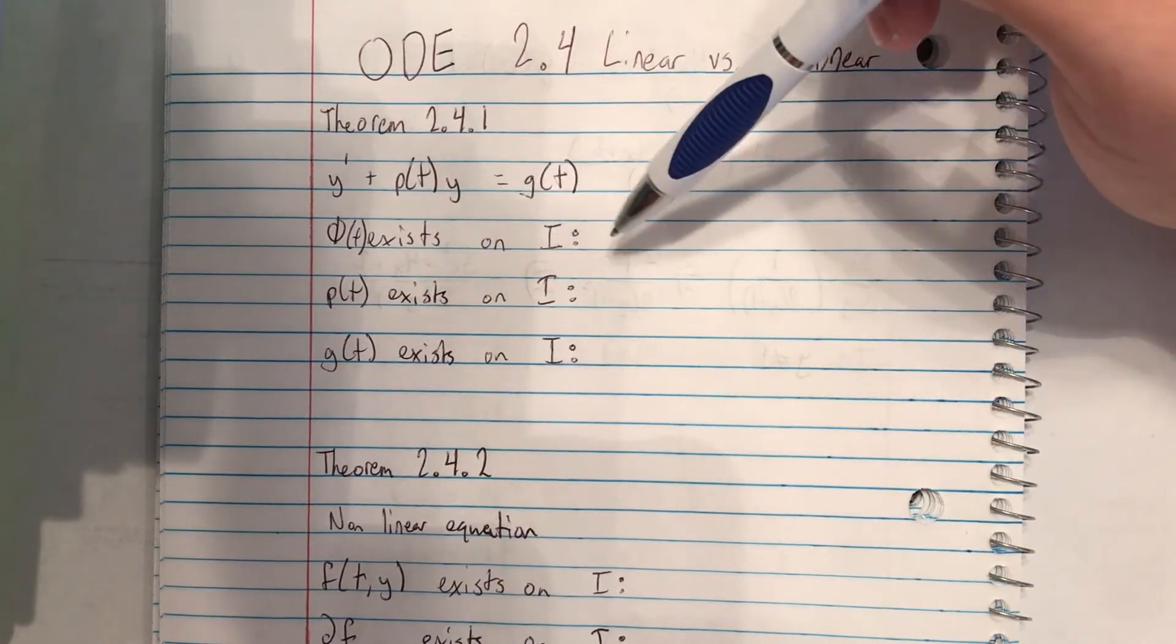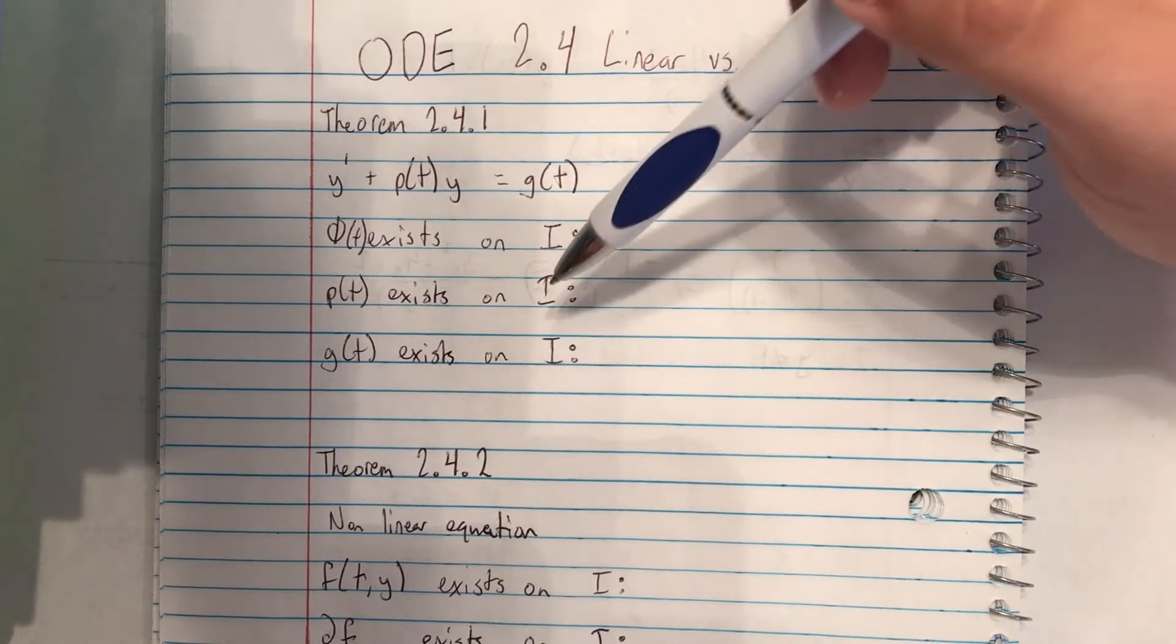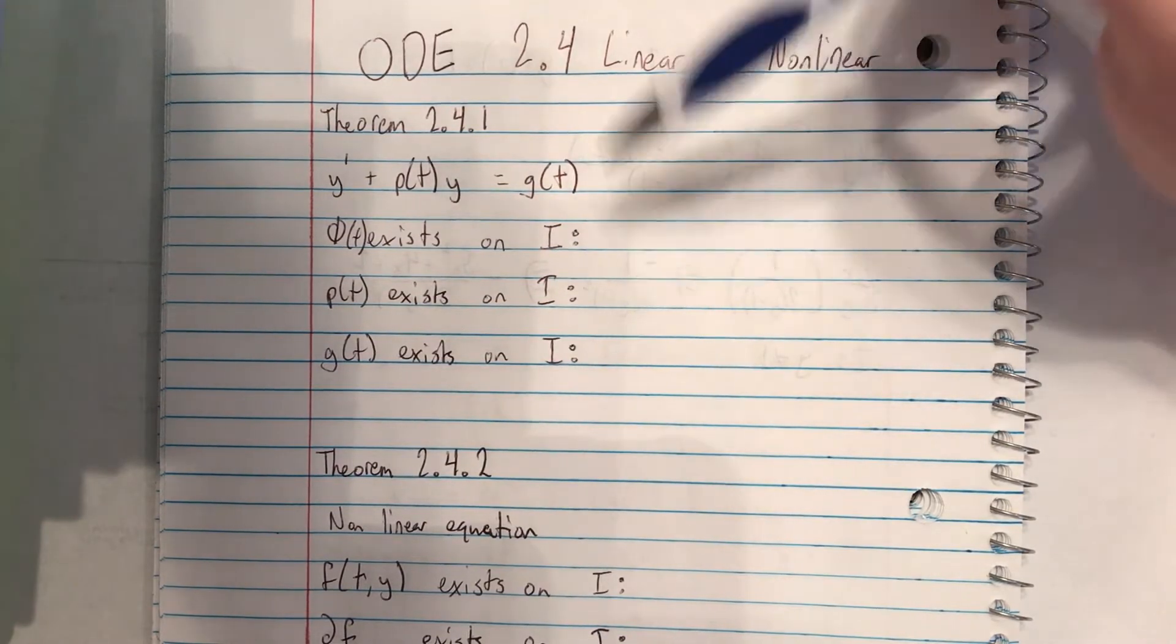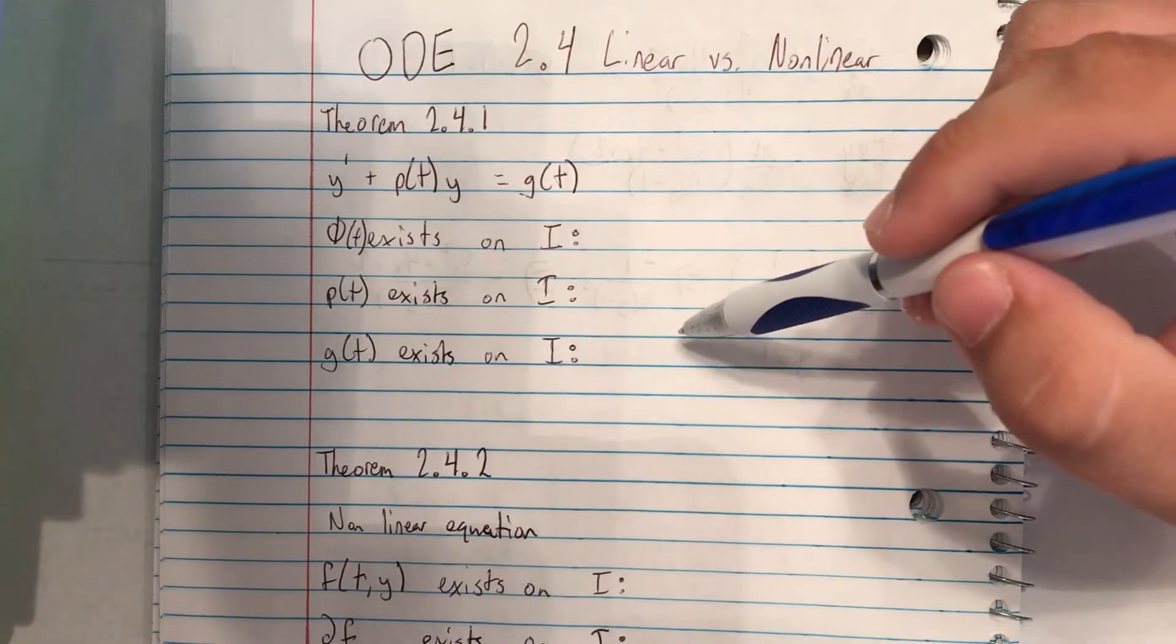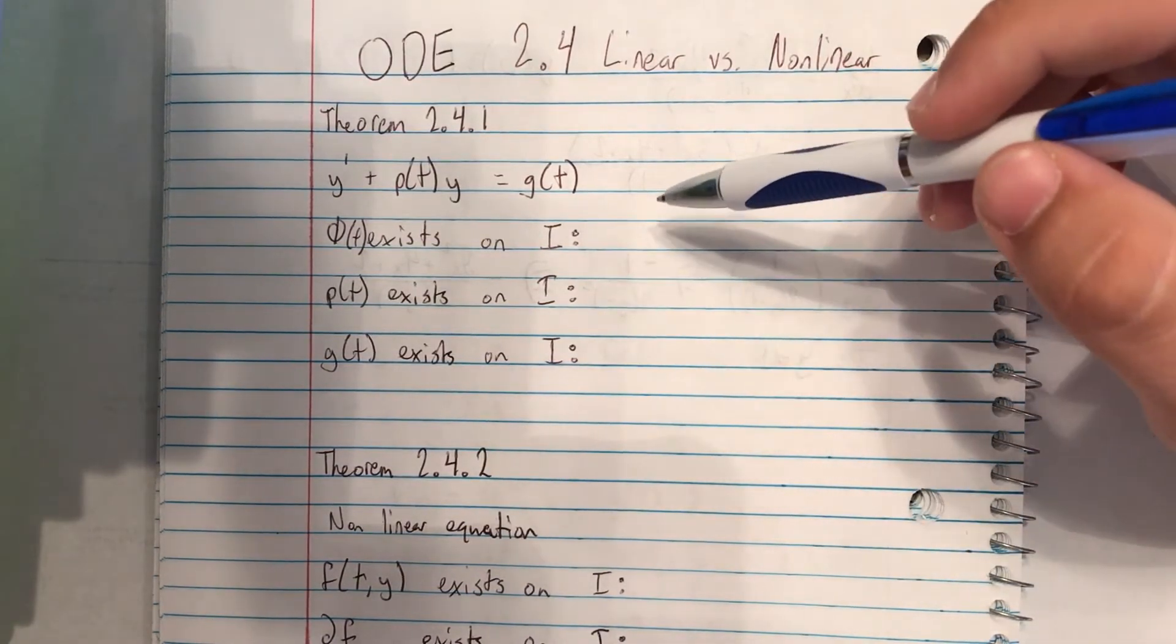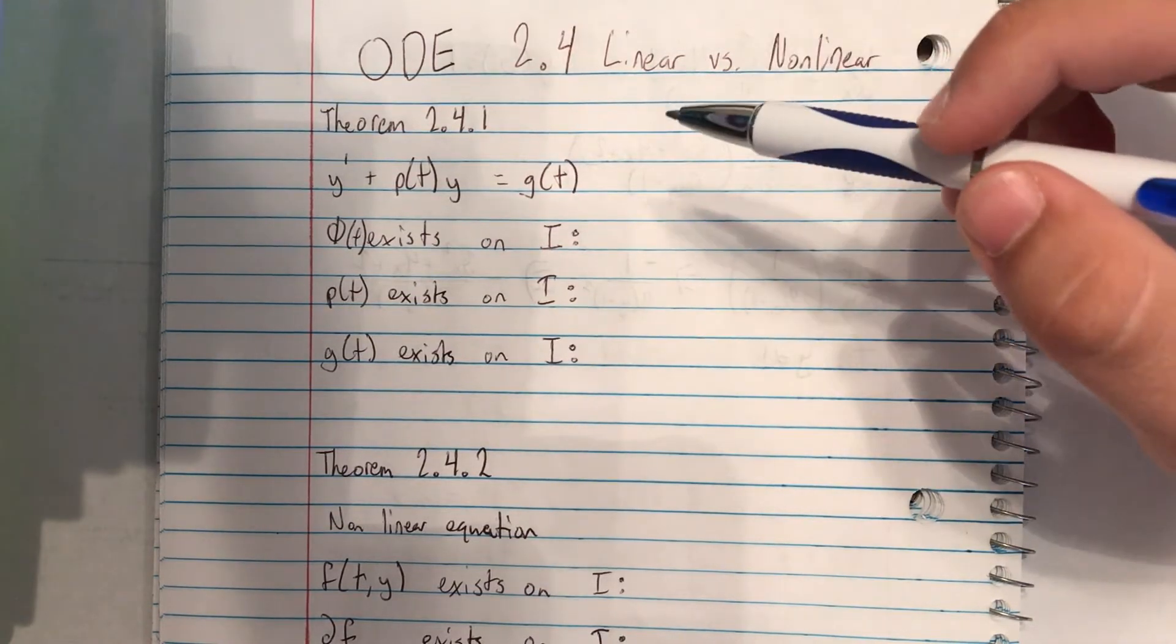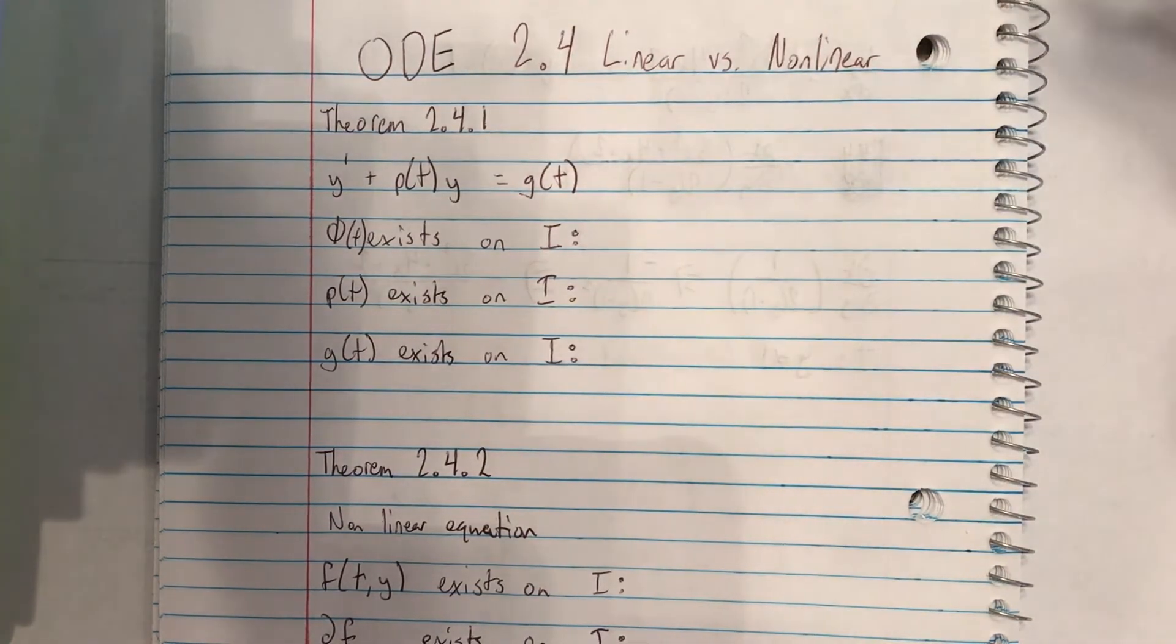p(t) exists on some interval and g(t) exists on some interval. So we look at these two intervals and see where they overlap, and then we have the initial condition and we can see exactly where the solution will exist. This will make more sense later on once we do some examples.